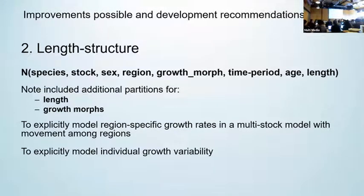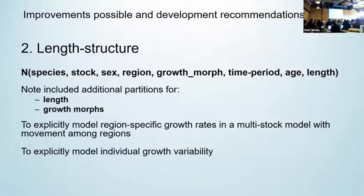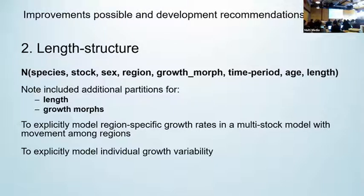In that recommendation, I also included the partitions for growth morphs and length structure. In respect of length, this enables one to explicitly model spatial heterogeneity in growth rates. This is most suitable because growth generally can be considered as a length-based process. Following the movement of fish among regions, the effect of region-specific growth rates can be correctly modeled by applying the growth of the ambient region into which the fish is moved in respect of that fish's length. Therefore, the temporal continuity of the growth history of the fish is maintained and is consistent with the movements among regions throughout its lifetime. A length structure would be a very useful feature to have.